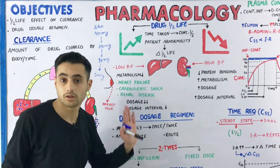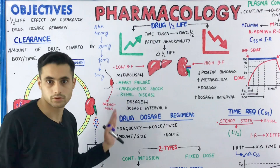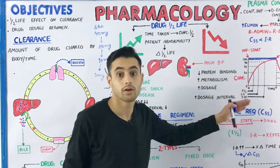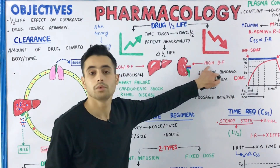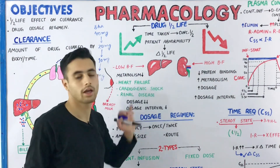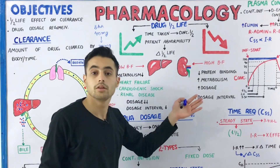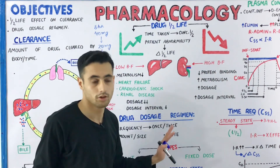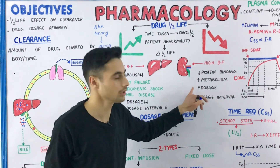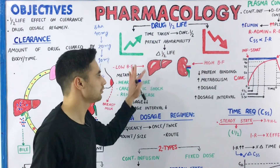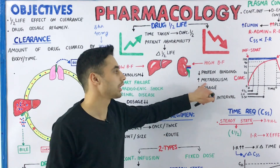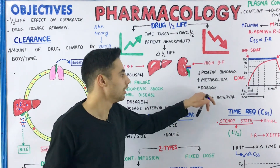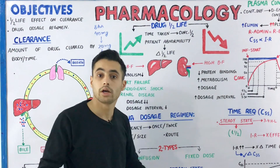In certain patients who have a decreased half-life, we do the opposite. They have high blood flow to their kidneys and liver, which metabolize and excrete the drug. Because blood supply to these organs is high and metabolism is increased, the drug is metabolized at a higher rate. So we must increase the dosage as well as the dosage interval to compensate.